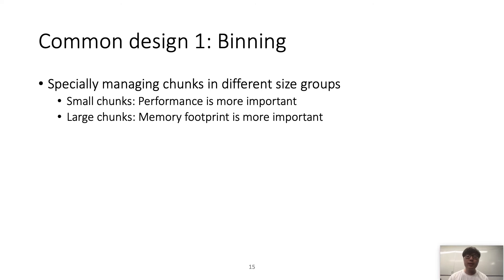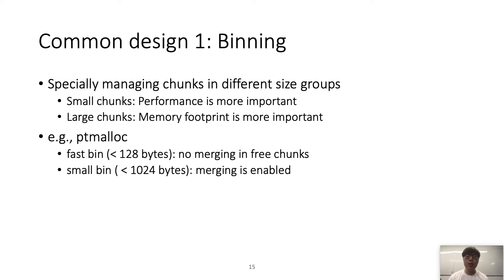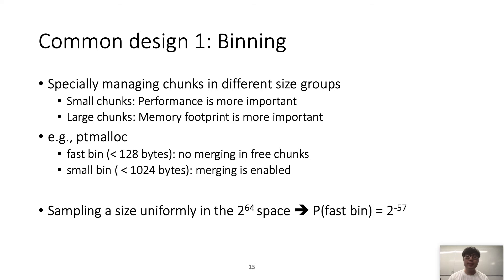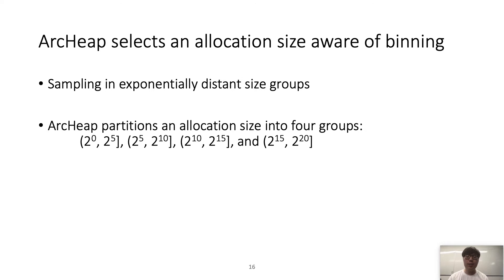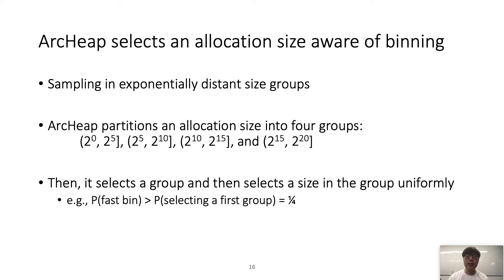We observed several common designs in allocators regardless of their underlying implementation. The first is binning: allocators specially manage chunks in different size groups because for small chunks performance is more important, while for large chunks memory footprint is handled more carefully. For example, ptmalloc2 has fast bin and small bin — fast bin does not have a merging mechanism, but small bin does. If we sample a size uniformly in 2^64 space, the probability of hitting fast bin becomes extremely low. To handle this, Rkip selects allocation sizes aware of binning, partitioning sizes into four groups, sampling a group first then selecting a size uniformly within it.